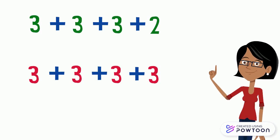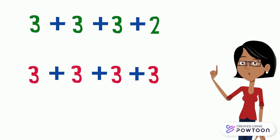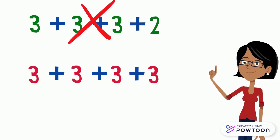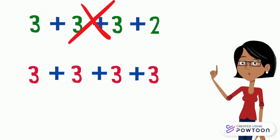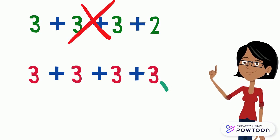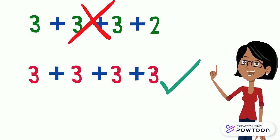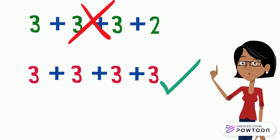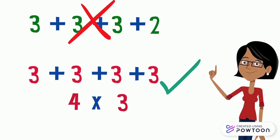Students, you should pay attention that 3 plus 3 plus 3 plus 3 plus 2 is not a repeated addition, while 3 plus 3 plus 3 plus 3 is a repeated addition. We can write this repeated addition in multiplication form as 4 times 3.